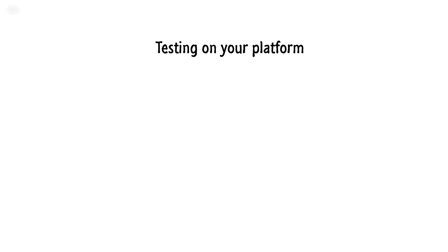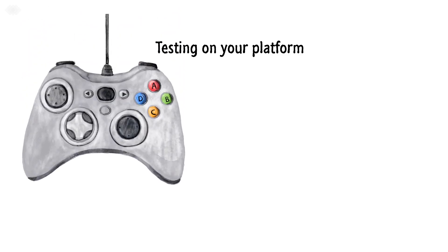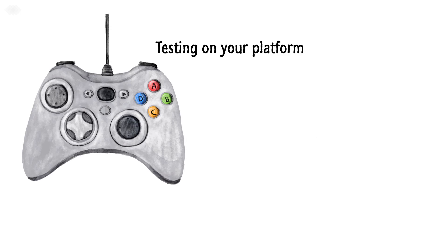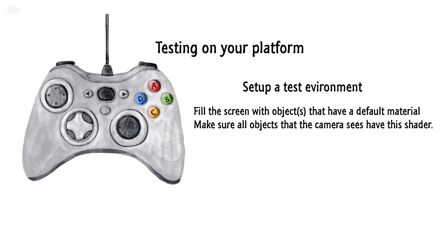Testing on your platform. The best way to get a more accurate result than the instruction count is to test on your respective platform. As a side note, the same instruction count can take different amounts of time on different platforms. All systems have a profiler that lets you check the time the GPU takes to complete the task. A good way to test your material is to set up a scene, fill the screen with objects that have the same base material — an expensive shader, usually your project's default shader — and make sure all objects the camera sees have this shader. Set your system to have a fixed camera and lighting, as lighting and the amount of pixels the camera sees of an object affects performance.